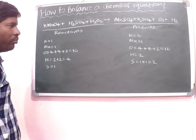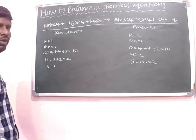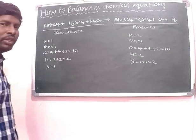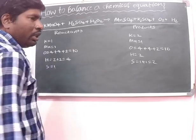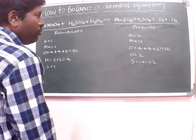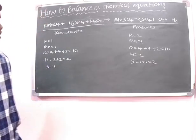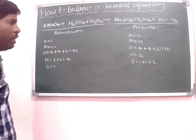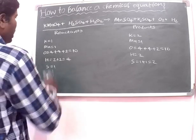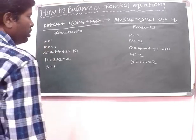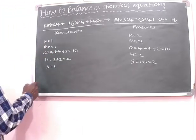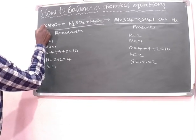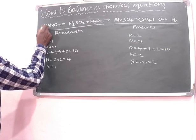So both sides are not equal. To make them equal we need to make use of coefficients. A coefficient is a number that we place in front of a chemical formula. In this equation we need to balance the potassium atoms first. To do this we need to put a coefficient of 2 in front of KMnO4, so here we write 2.